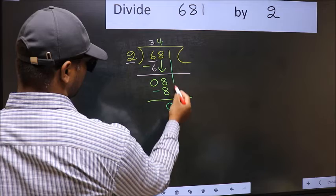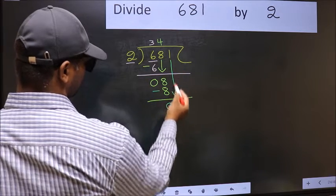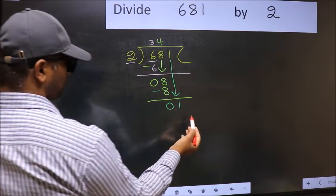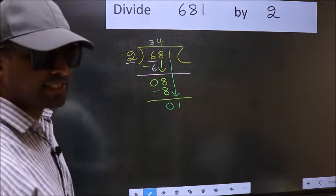After this, bring down the beside number. So, 1 down. After this step, the mistake happens.